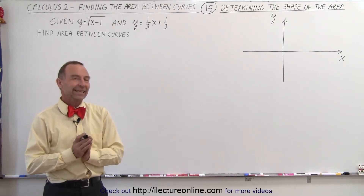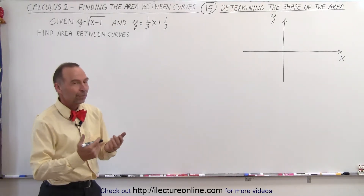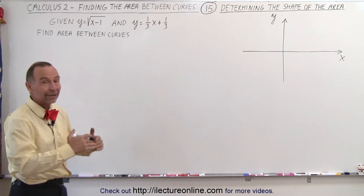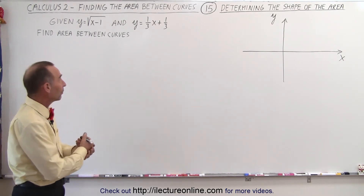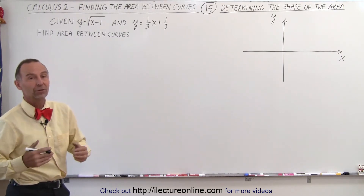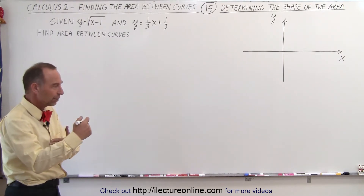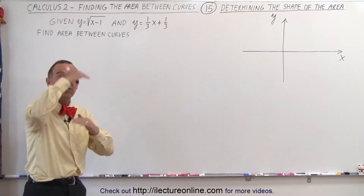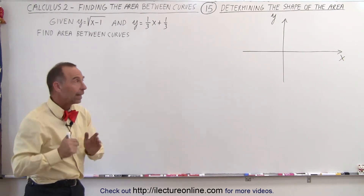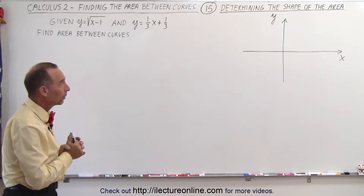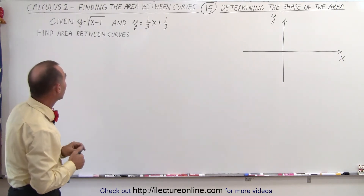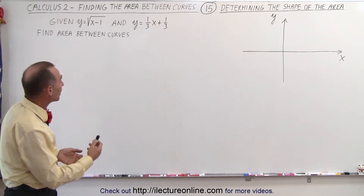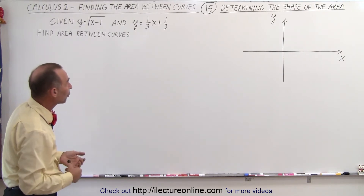Welcome to our lecture. This next example is set up to show you that sometimes it's difficult to figure out what the area even looks like — whether the functions actually cross, and which function is higher than the other. We have y equals the square root of x minus 1, and y equals one-third x plus one-third.